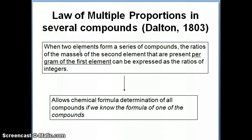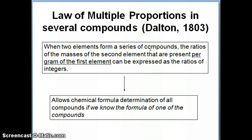For example, in one case you have carbon and oxygen forming one type of compound, and in another case they combine to form a different compound. You can think of this as carbon monoxide and carbon dioxide. At that time they didn't know the different formulas, but they knew there were two different oxides of carbon — one formula and another.